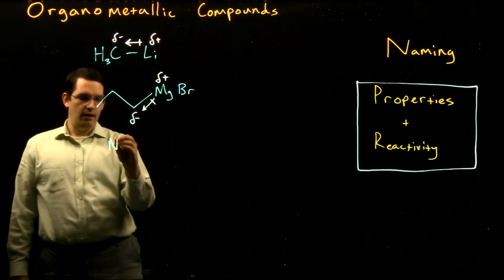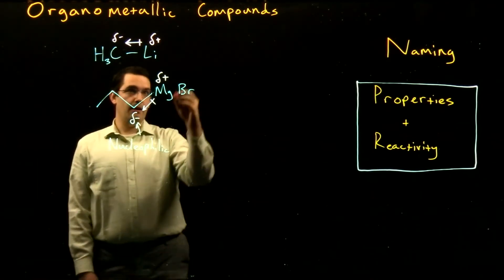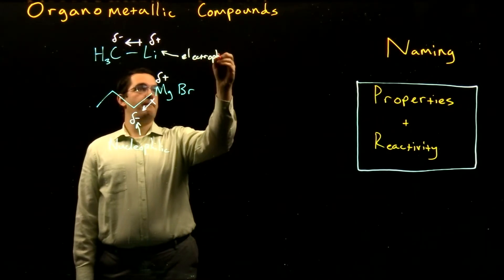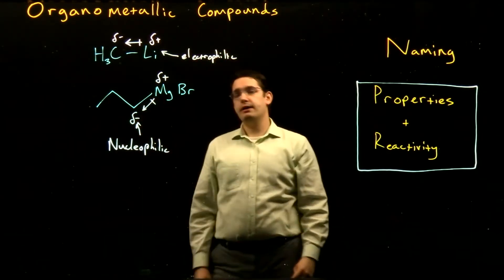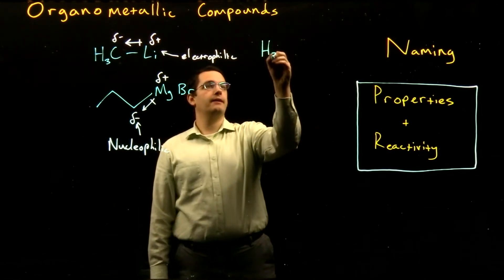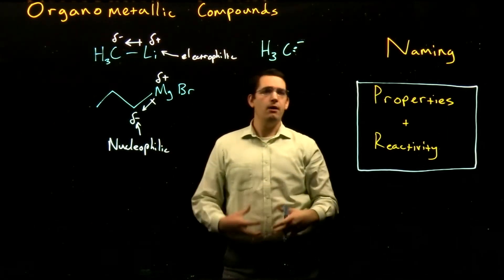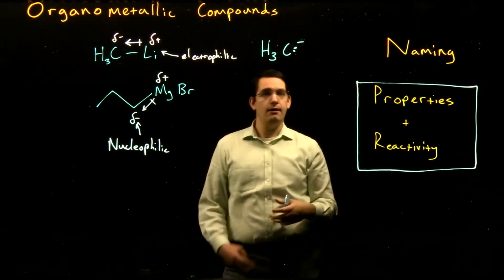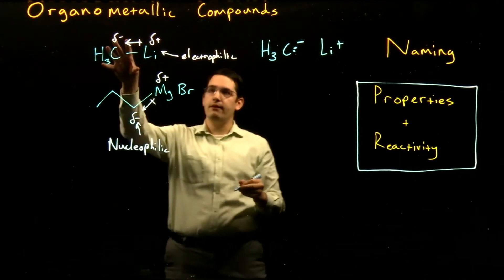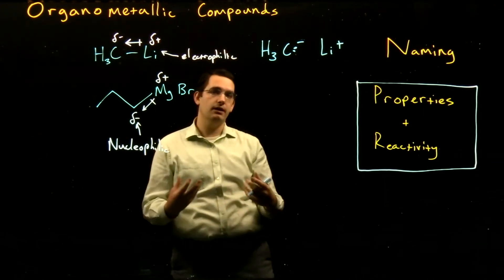We have a strongly nucleophilic carbon and our metal is strongly electrophilic. Our highly polarized bond enables our carbon to act as a highly reactive nucleophile. We can almost treat these compounds as carbanions — our carbon gets such a large share of those electrons that it behaves very similarly to a carbon anion, with strong basicity and nucleophilicity. For reactivity purposes we can almost just look at it as that carbanion.